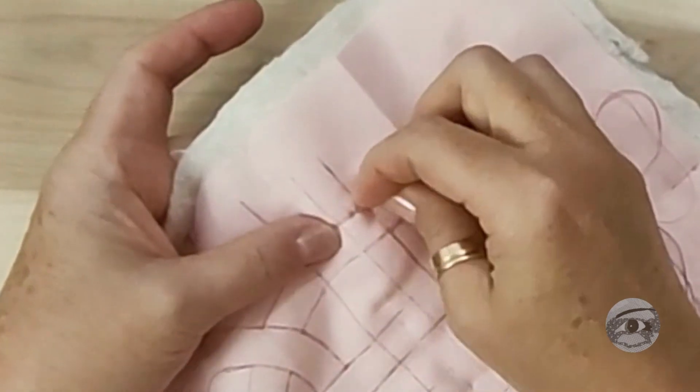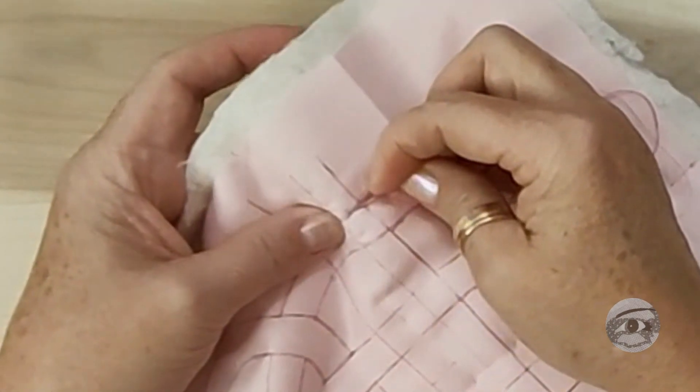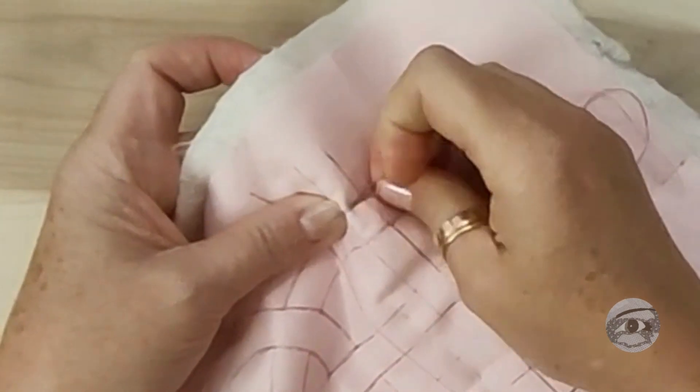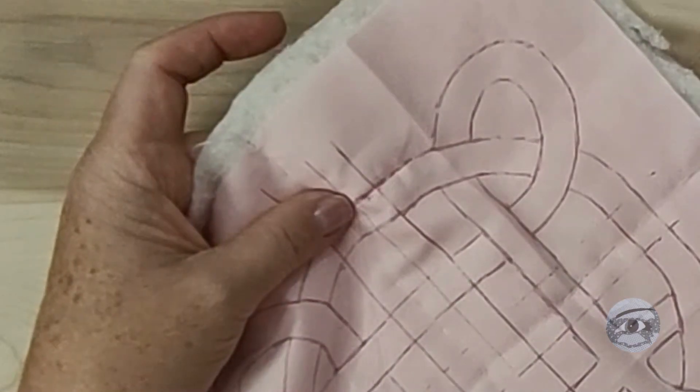The needle should go straight through all three layers. The stitch is simple, like a running stitch, but smaller and closer together.